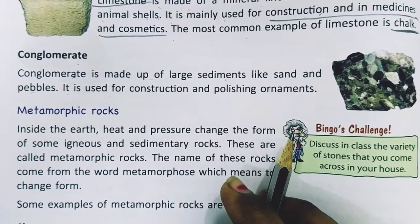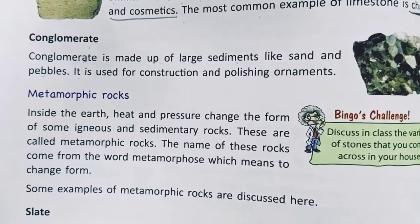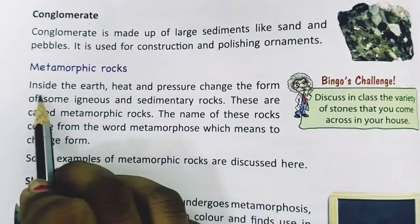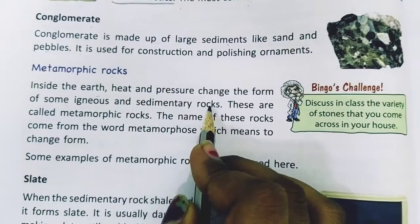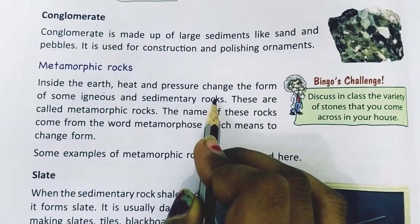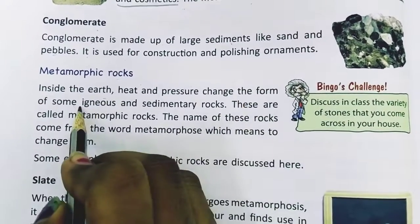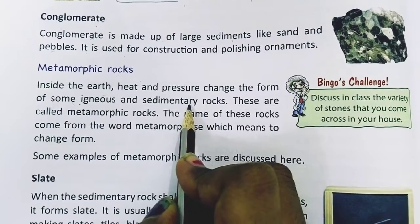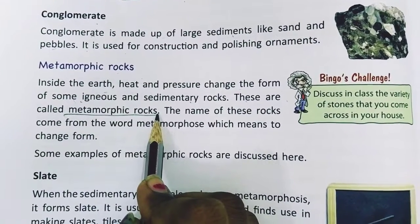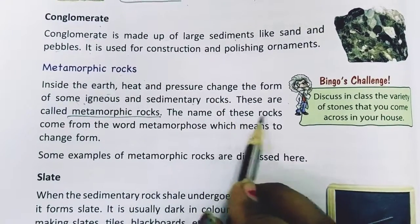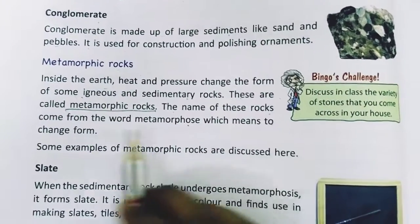So those are our sedimentary rocks. Our next topic is metamorphic rocks. Inside the earth, heat and pressure change the form of some igneous and sedimentary rocks. These are called metamorphic rocks. The name came from the word metamorphosis, which means to change form.